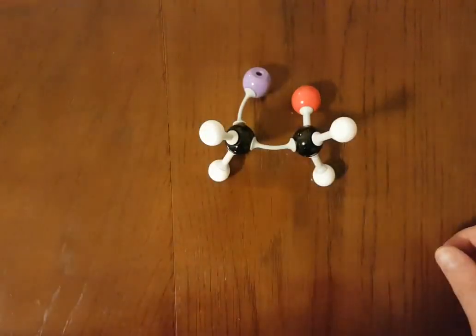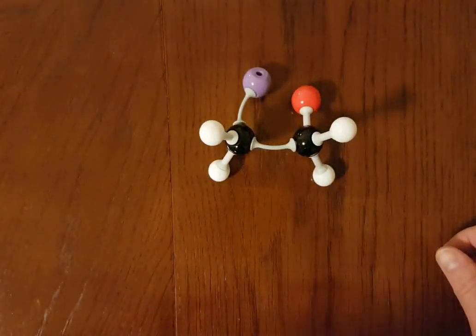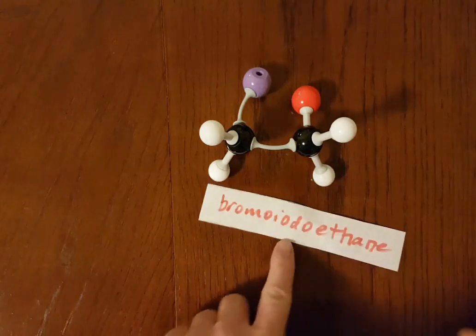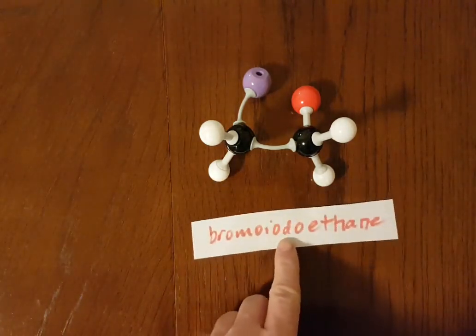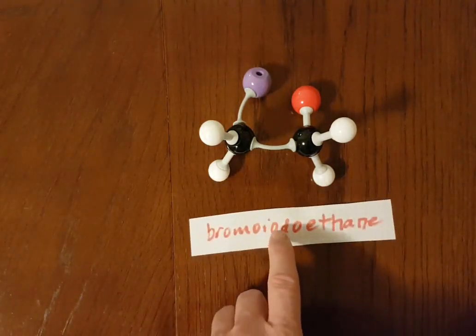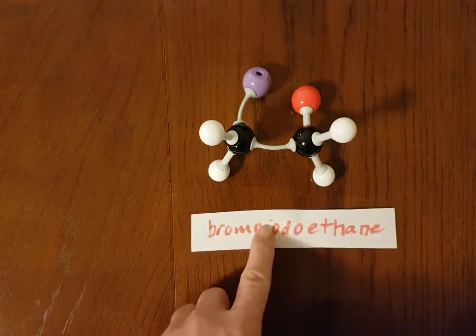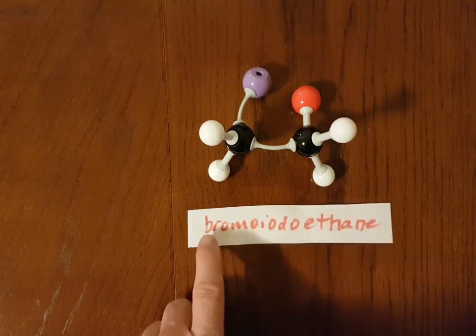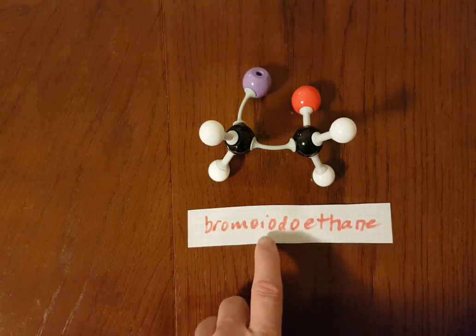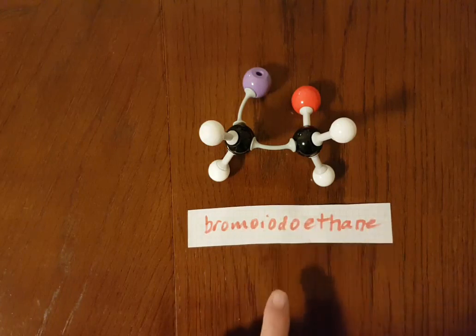Now, how do you name this? Well, it's bromo-iodo-ethane. Does it matter if you put the bromo before the iodo or switch them around? Yes, it does. It's got to be alphabetical. So, B comes before I. What about the numbers? No numbers needed.